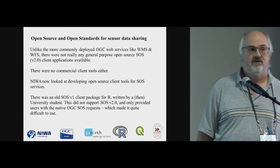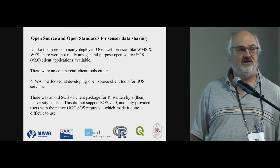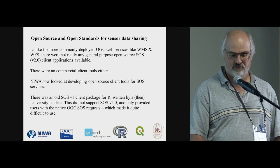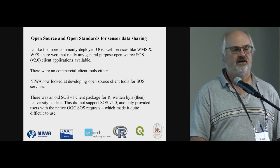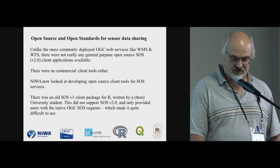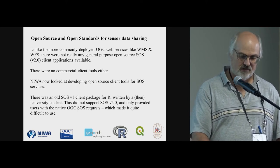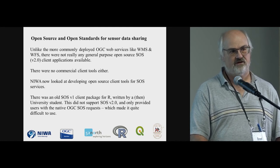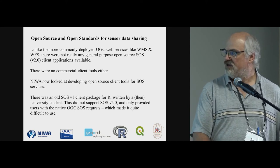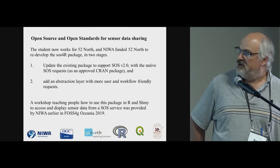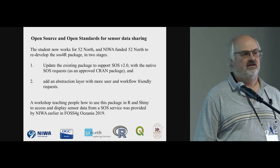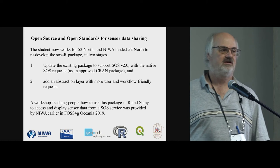The next chapter in the story was developing some client tools. Some of you were at the workshop yesterday, where we went through how to use our SOS4R package to develop your own Shiny application to interact with a SOS tool, put it on a map, query it, and view the data from an R and Shiny-based approach. There was an existing SOS4R package, but it was written by a student, it was only SOS version 1, and it didn't work. If anyone has used the native SOS requests under the OGC specification, they are not intuitive and don't fit any sensible workflow. So once we rebuilt the tool to support that, we added an abstraction layer so that the R tool provided commands that allow a much more user-friendly and workflow-oriented approach to requesting data from a SOS service.